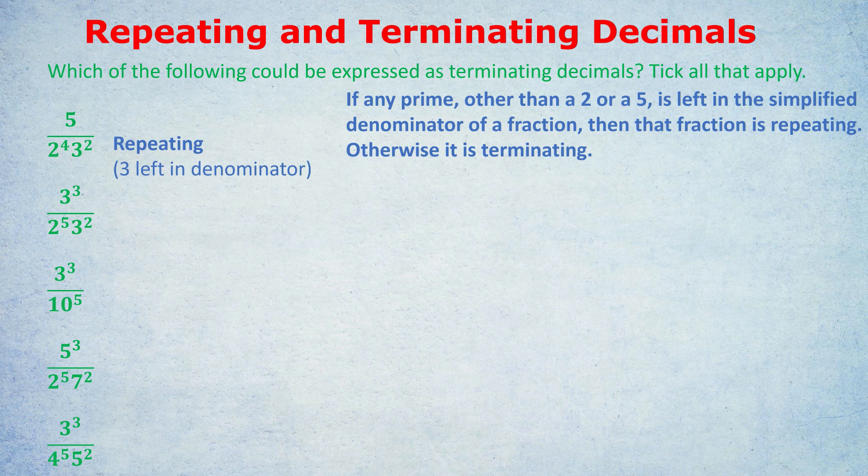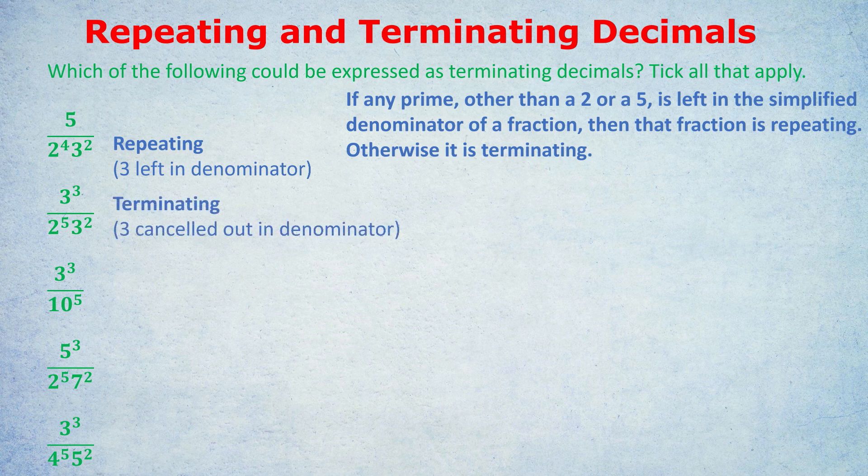What about the next fraction? Isn't that repeating because we have a 3 squared in the denominator? No. If you simplify the second fraction, the 3 squared and the 3 cubed will cancel down, cancelling out the 3 squared in the denominator and just leaving a 3 in the numerator, meaning the only thing left in the denominator will be 2 to the power of 5. So that would be a terminating decimal. The 3 was cancelled out.